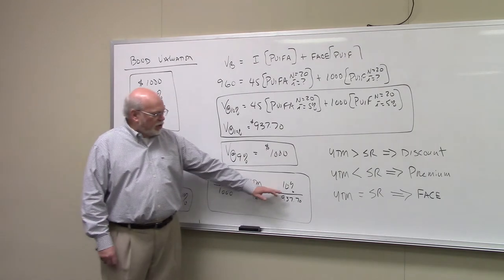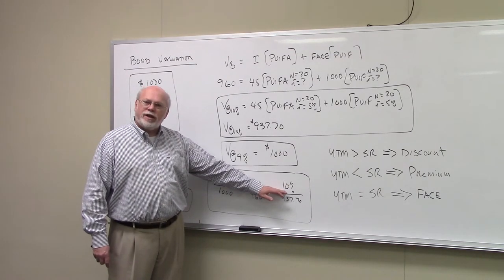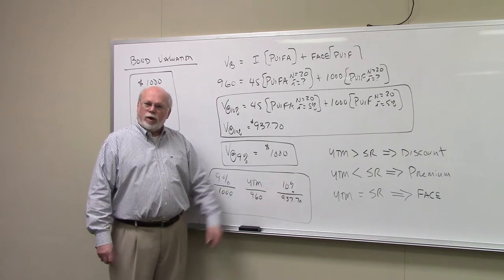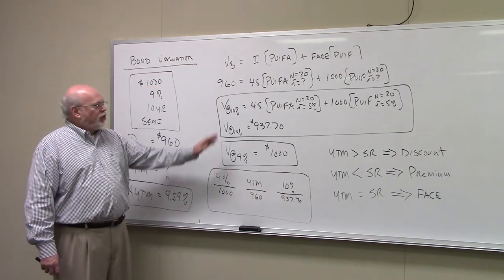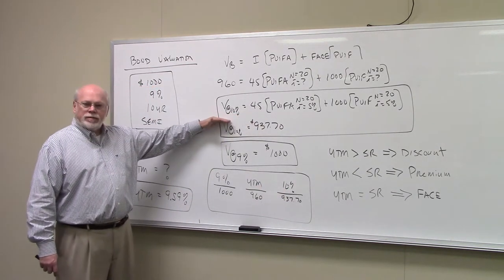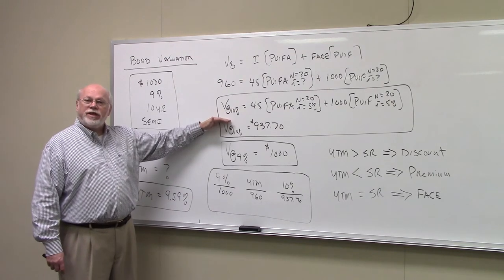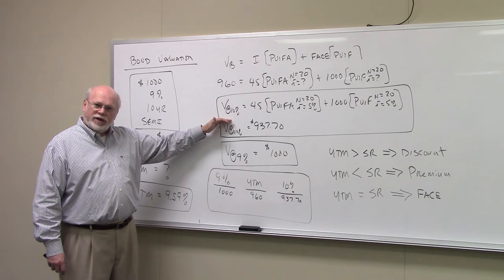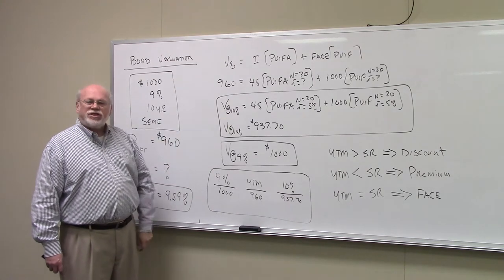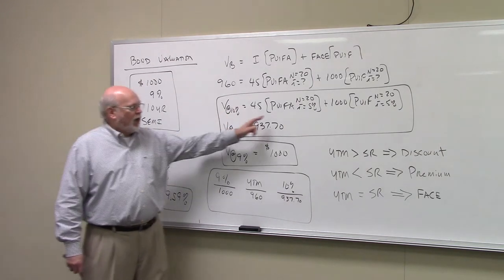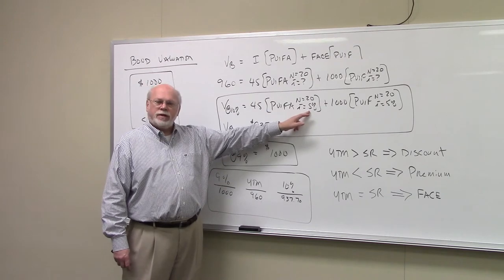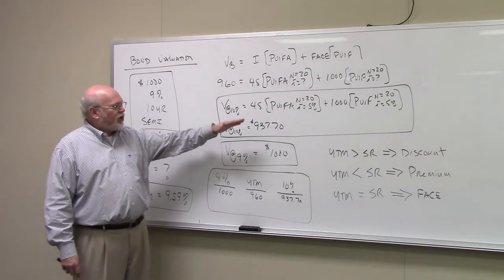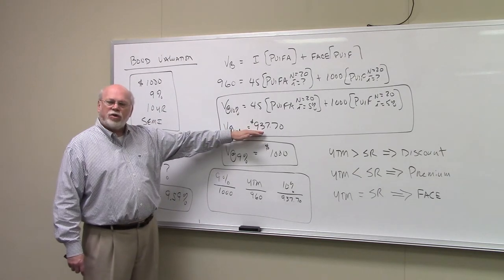The next question is, what would be the price of the bond in the market if the yield were 10%? Well, to find that out, you would simply plug 10% into the bond pricing formula that we learned in an earlier video. And in this case, this is a semi-annual bond. So, I is going to be 5%, N is going to be 20, the number of payments. And if we figure all that out, we get 937.70.